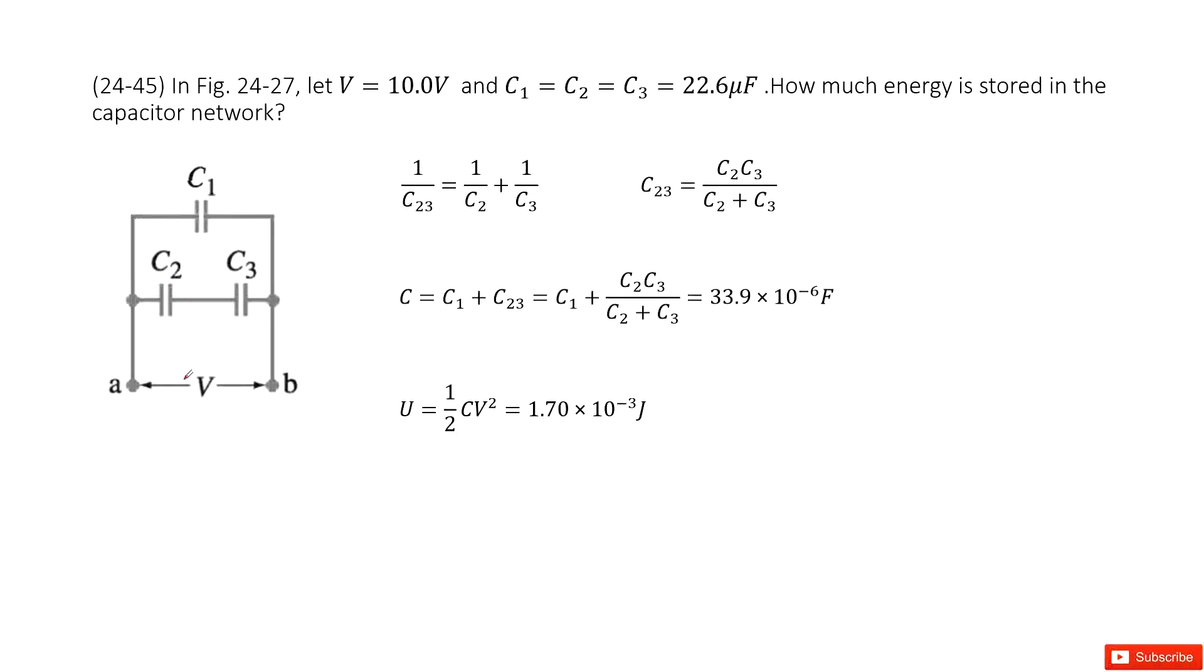In this capacitor network, you can see the first quantity given is potential difference V. This is given. Inside this capacitor network, we have three capacitors: C1, C2, and C3.